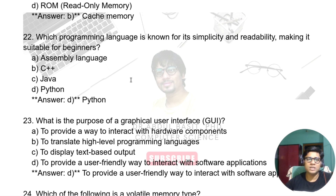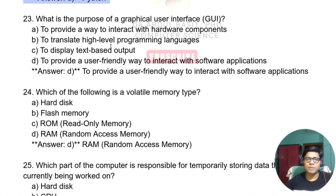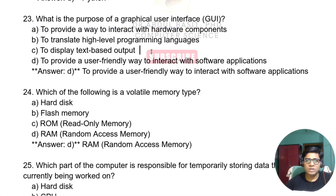Which programming language is known for its simplicity and readability, making it suitable for beginners? Python is very simple and suitable for beginners. What is the purpose of a graphical user interface? The purpose of a GUI is to provide a user-friendly way to interact with software applications.